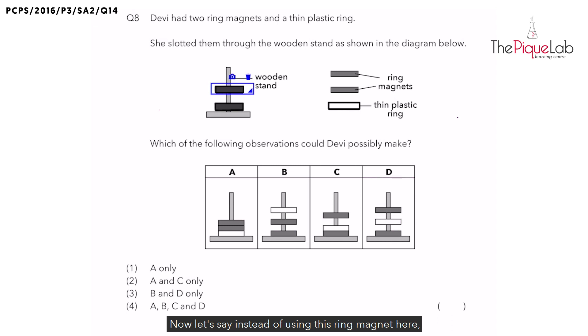Now, let's say instead of using this ring magnet here, I use the plastic ring and I slot it through the wooden stand. Is there a chance for the plastic ring to be floating over the ring magnet just like this? No. Why no? Plastic is a non-magnetic material. And so, can the plastic ring repel the magnet? No. The plastic ring will naturally be sitting on top of the ring magnet. Remember, only magnets can repel. But specifically, only magnets with like poles facing each other can repel.